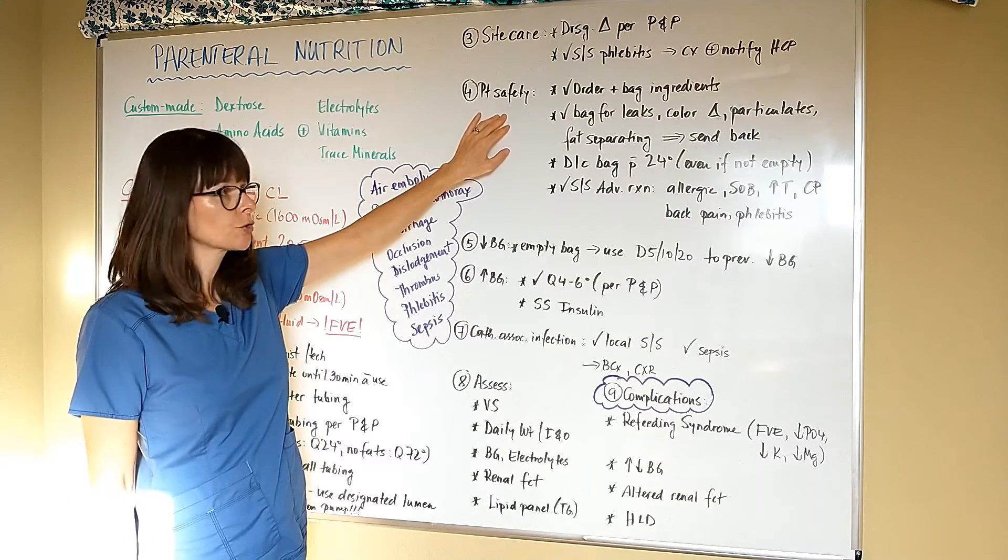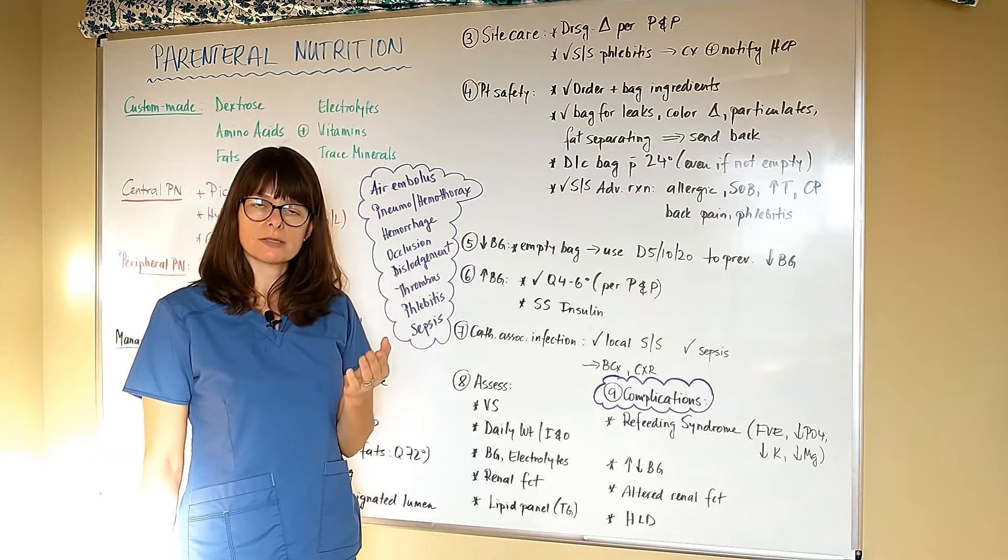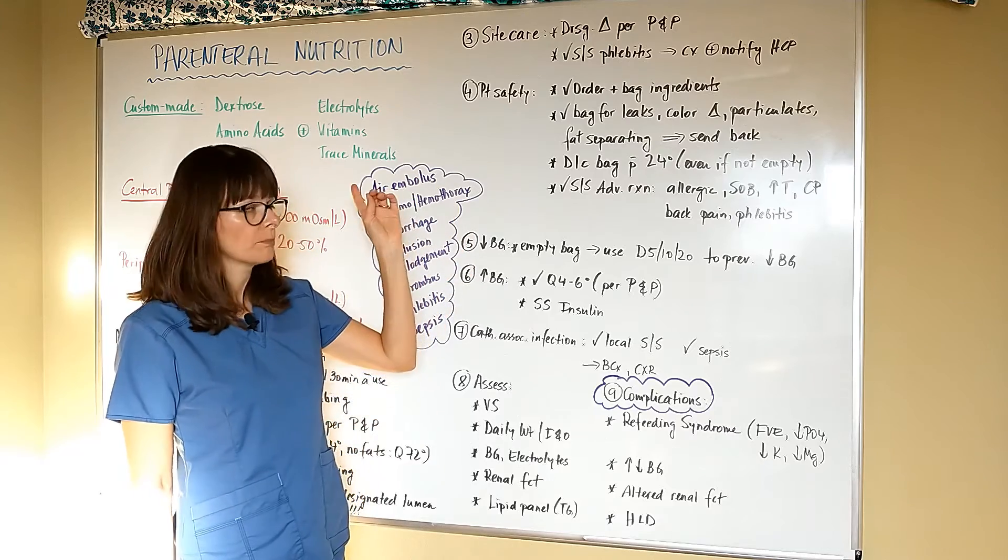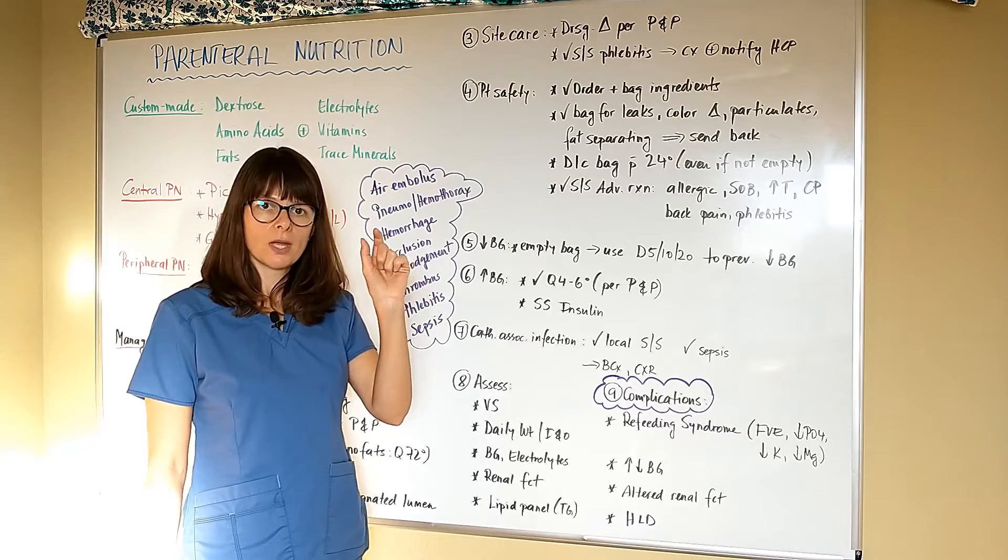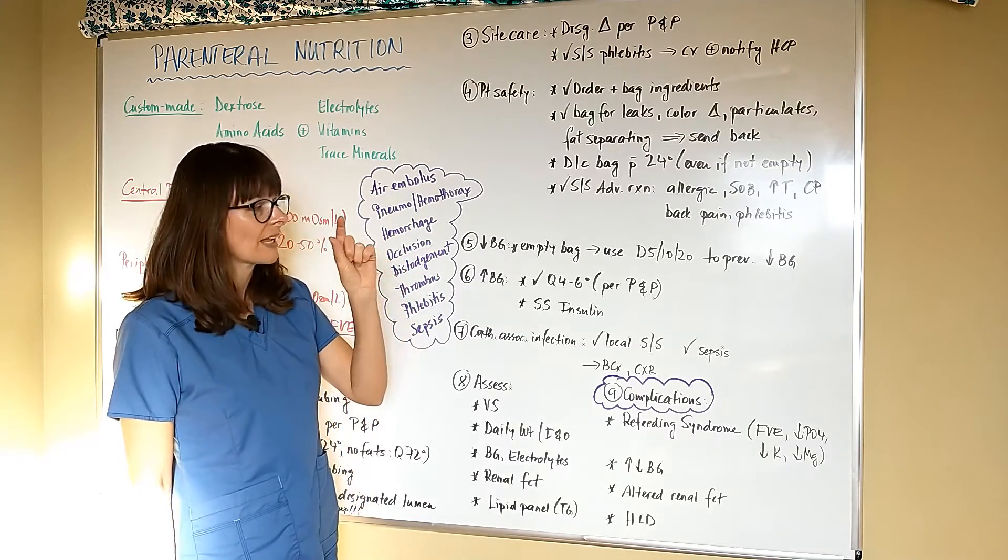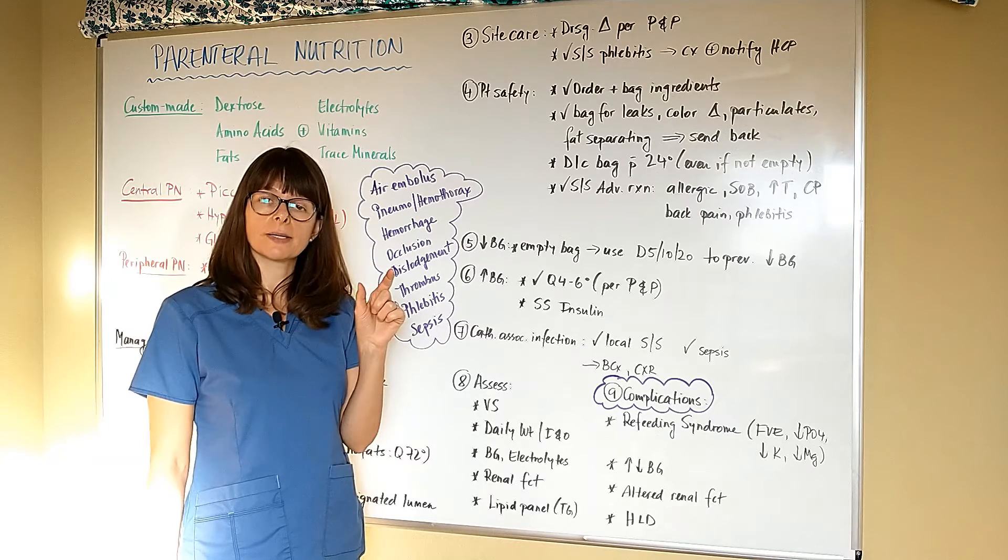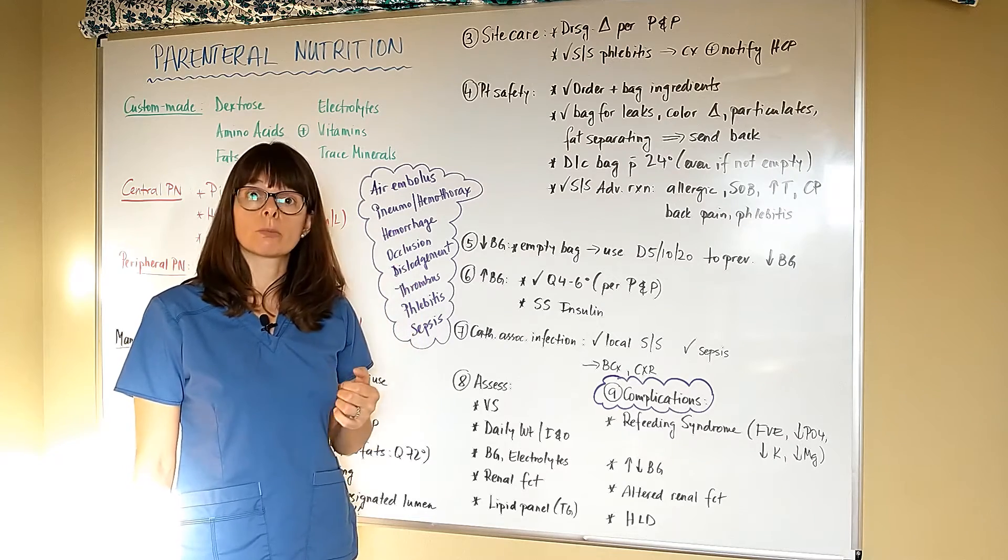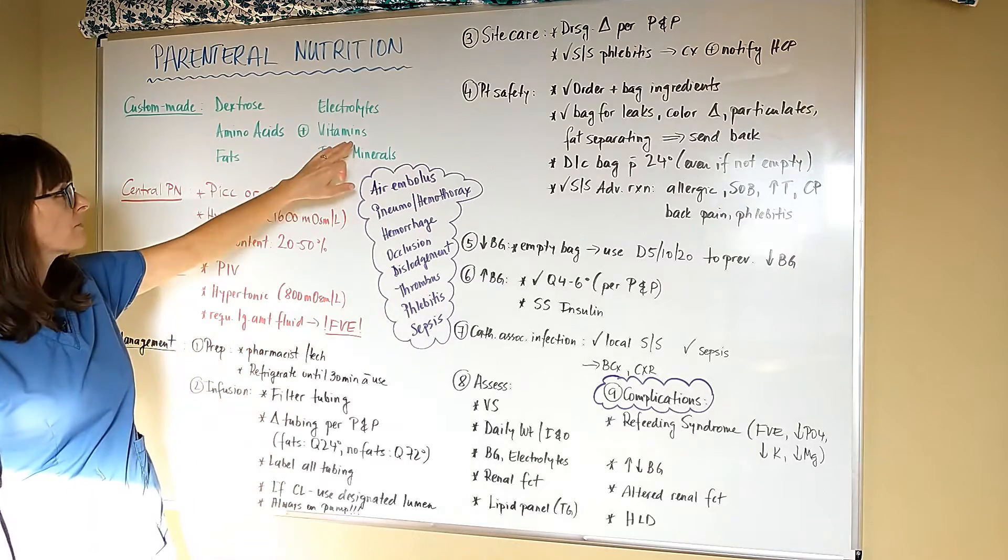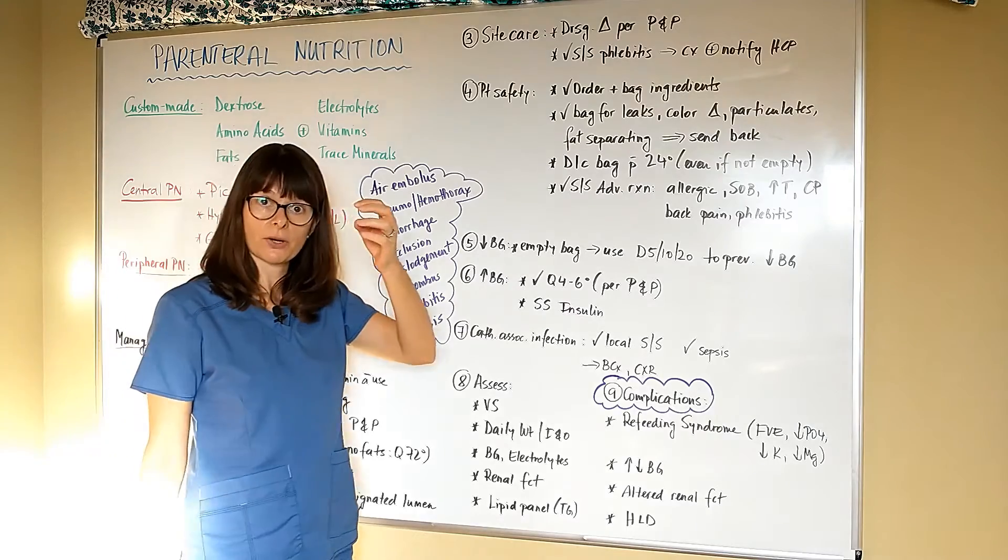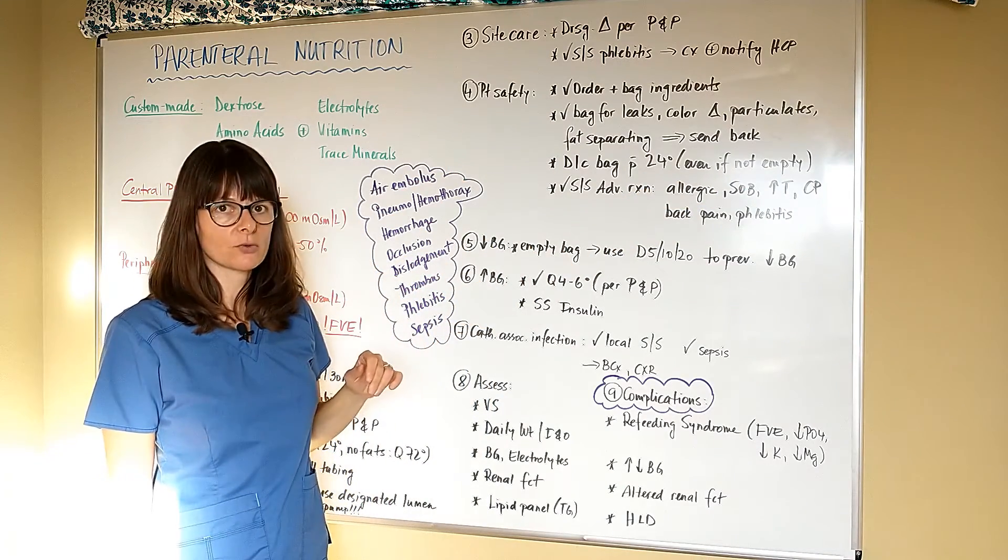When we administer parenteral nutrition, we want to always check the order in the bag ingredients. Just like a bag of antibiotic would be labeled with the medication as well as the dosage, the parenteral nutrition bags will be labeled exactly as to how much, how many grams and milligrams and micrograms of the electrolytes, minerals, dextrose and so forth they contain. Always double and triple check these orders just like you would with any other medication and make sure that you check it against the order. This is a little bit more of a tedious process because there might be many more ingredients than in a normal saline solution. Definitely check the bag for leaks, any kind of color change or particulates, because we're now dealing with vitamins, electrolytes, trace minerals or proteins that can get a little bit crispy. We want to make sure that there are no particulates because if they end up in the bloodstream, that could be disastrous outcome for the patient.